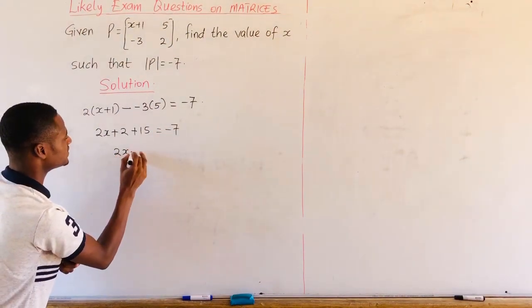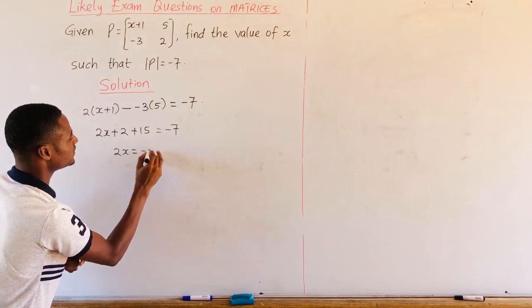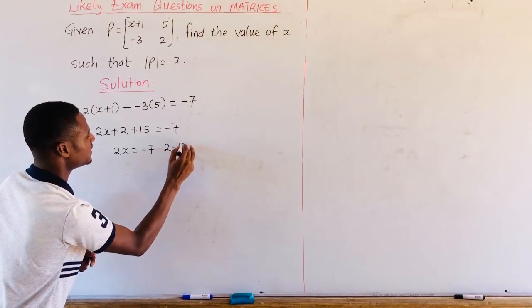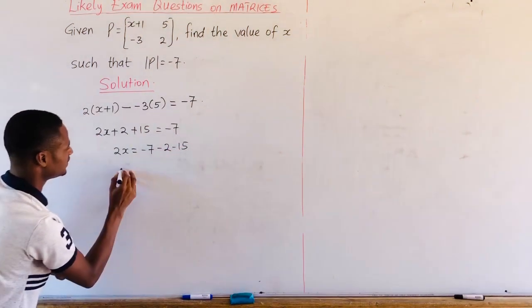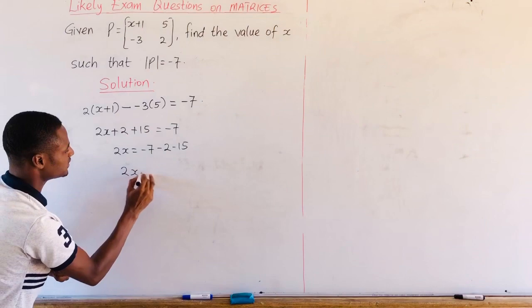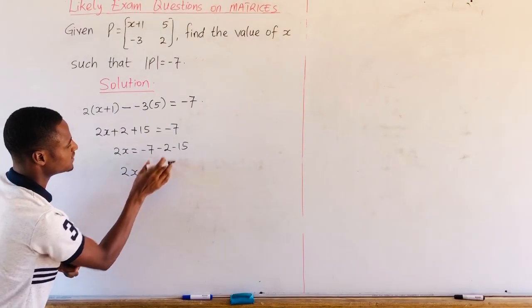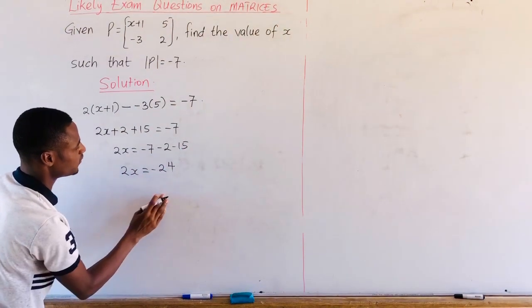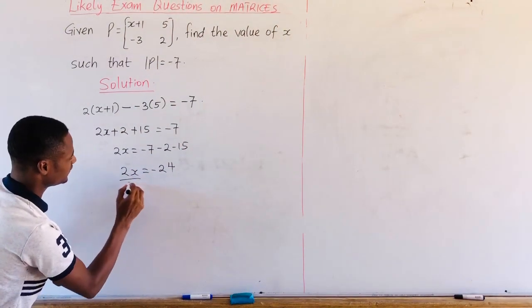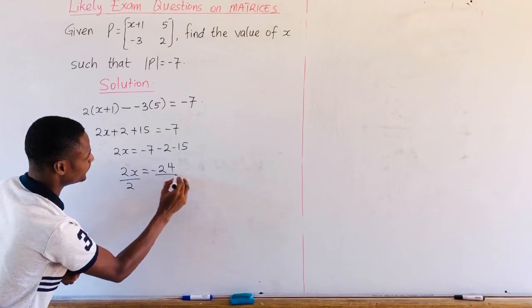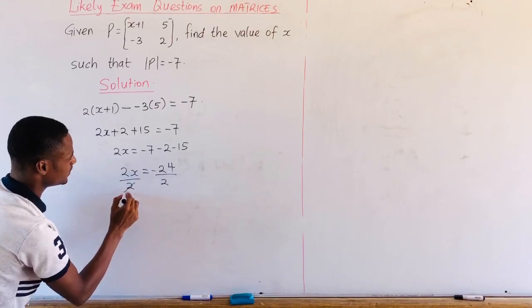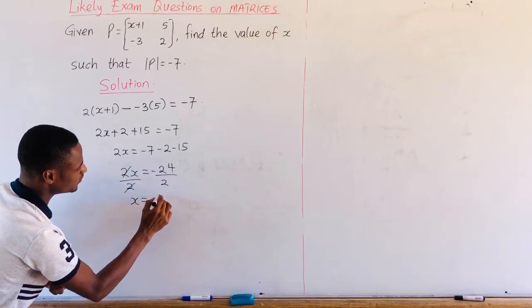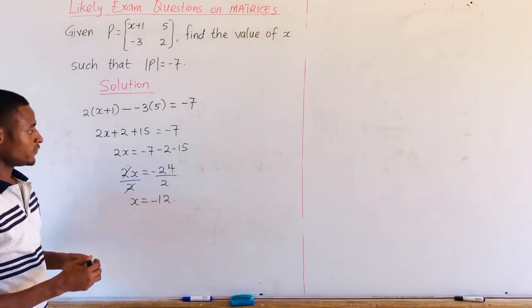So 2x is equal to negative 7 minus 2 minus 15, which gives us negative 24. Dividing both sides by 2, we have x is equal to negative 12.